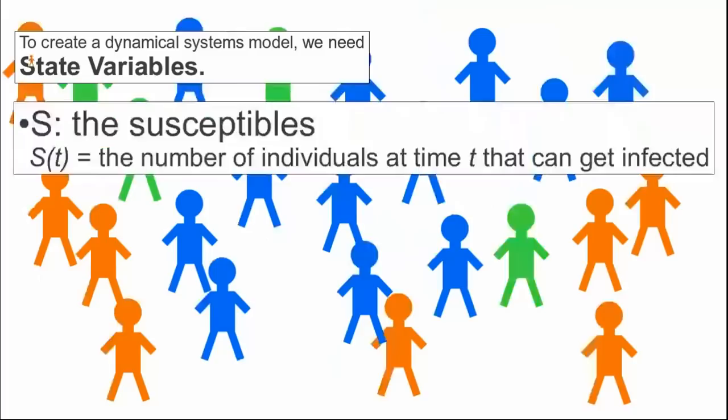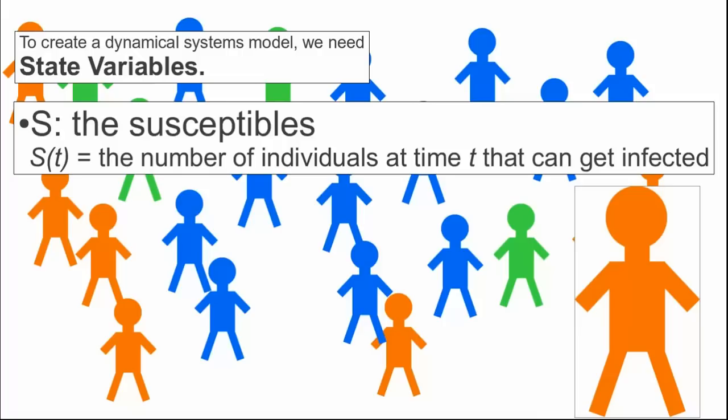The first is S, or the susceptibles. We let S be the number of individuals at time t who can get infected, i.e., the number of orange guys. Since S changes with time, we usually write it as a function of time, but sometimes we just write it as S.